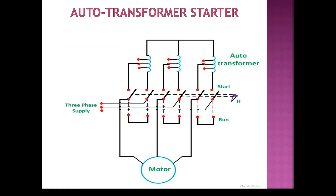Next is the auto transformer starter. Here we can see a star connected auto transformer connected to the motor. Three-phase supply will be given to the three terminals of the transformer and the other three terminals will be given to the motor. The primary of this transformer will be connected to the supply, and the secondary tappings will be connected to the motor initially. The tappings give reduced voltage to the motor. Depending upon how much voltage we want, we can set our tappings to take that reduced voltage and apply it to the motor.